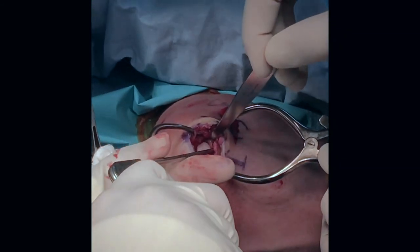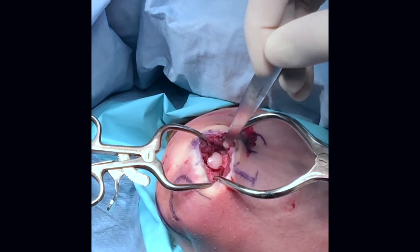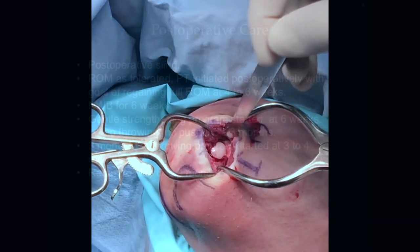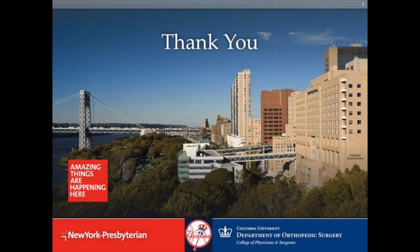Any fragmented adjacent cartilage is removed, and we see a flush, stable insertion. Post-operative care protects the elbow for four to six weeks, followed by gentle strengthening at three months before a throwing program is initiated, with return to play between six and nine months.